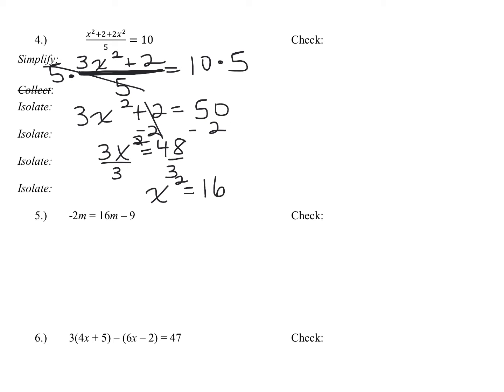Now the opposite of squaring something, remember, is to find the square root. Now, when I find the square root of both sides, there are two numbers I can put in for x to get 16. Remember, x equals four and negative four. So the answer to this one is x equals plus or minus four.